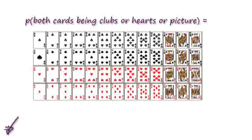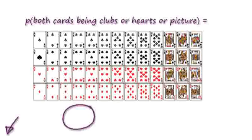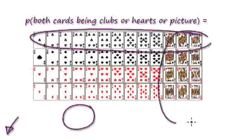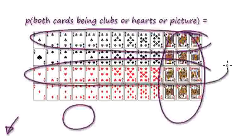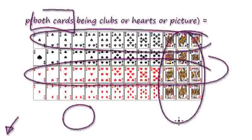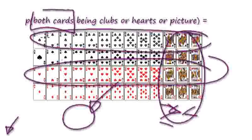Press pause and work it out. Remember, in order to answer this question there's an overlap somewhere. Jump to the Venn diagram. And because you're picking out more than one card, you might have to draw the tree diagram, and then combine the Venn diagram with the tree diagram to answer this question.